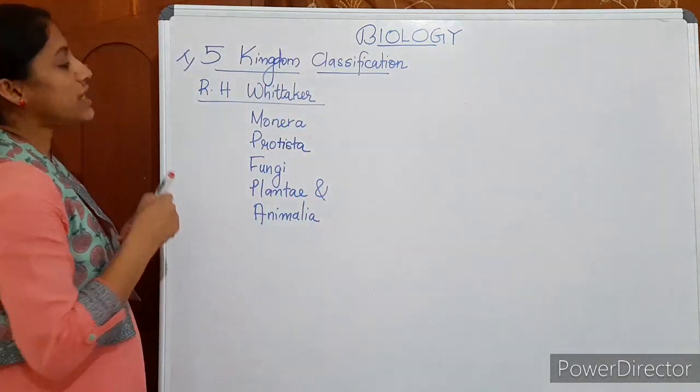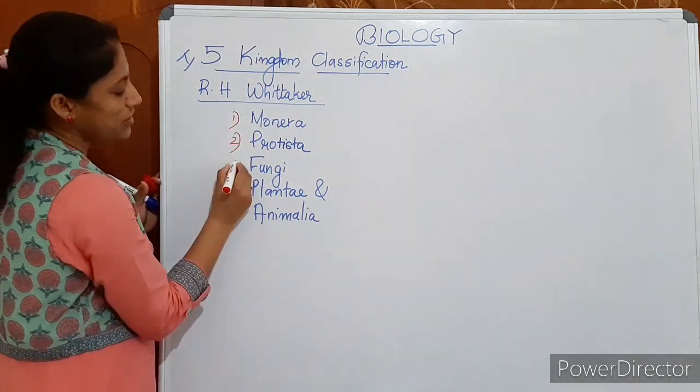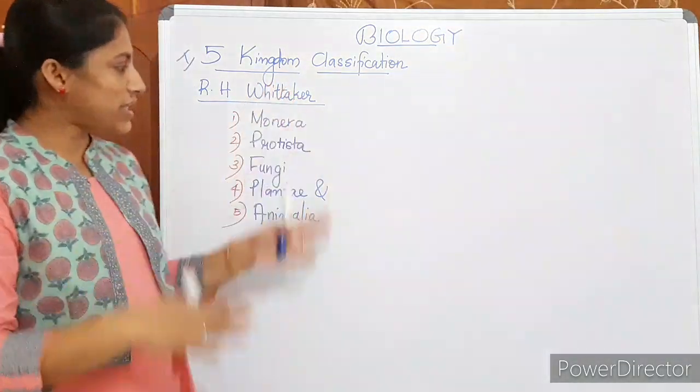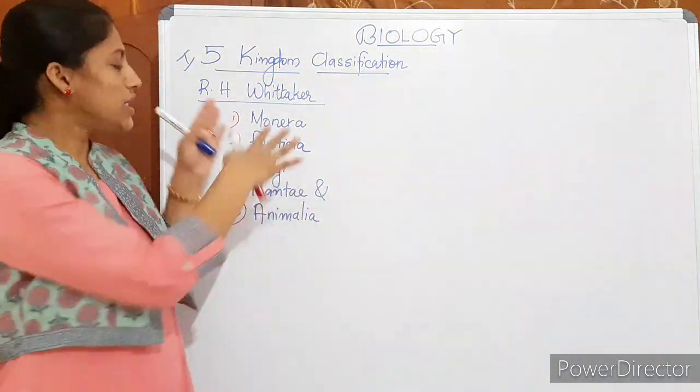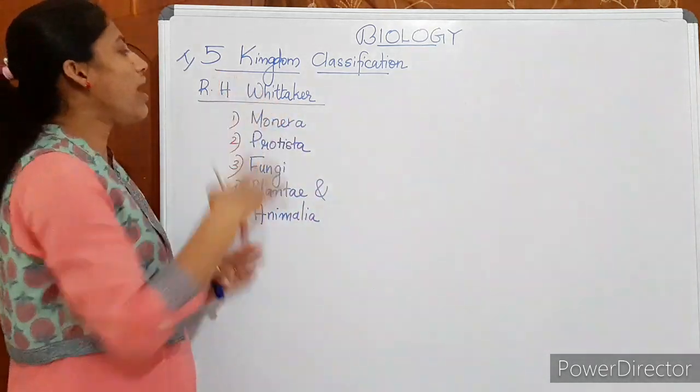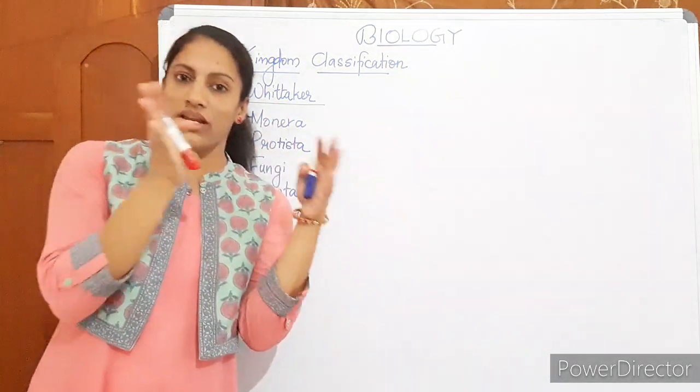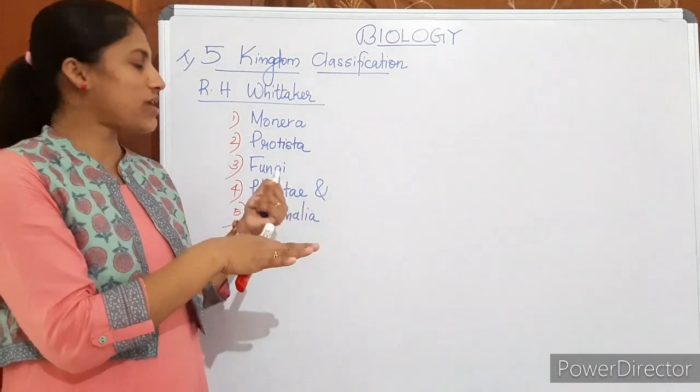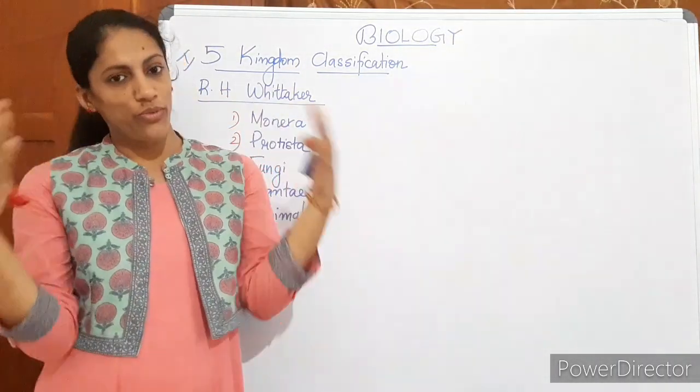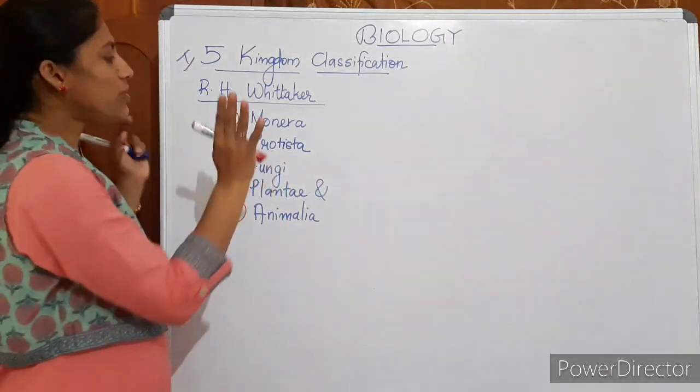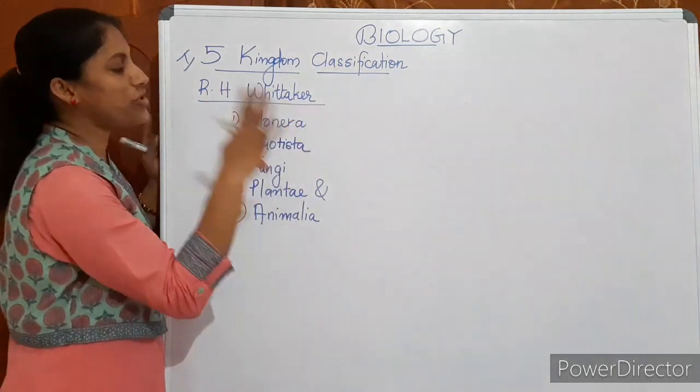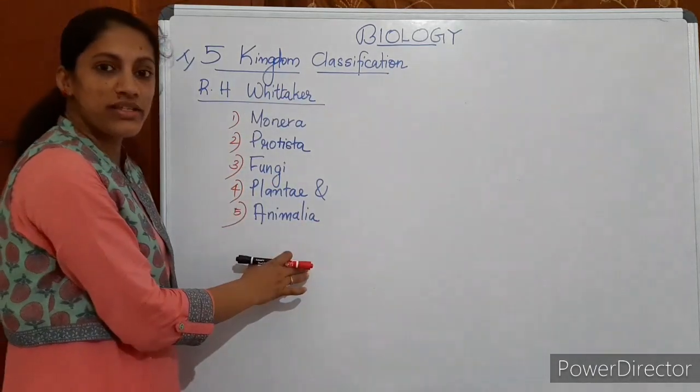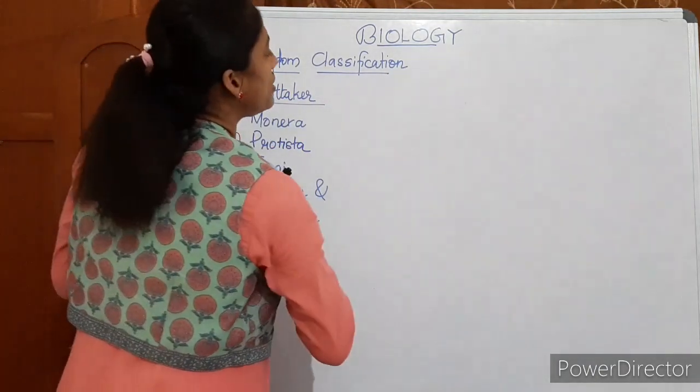On which basis he has introduced this classification? That is what every time you have confusion. Every time you have to learn it by heart. What are the characteristic features based on which these kingdoms are introduced by R.H. Whittaker? Now just understand on which basis he has introduced this classification strategy.